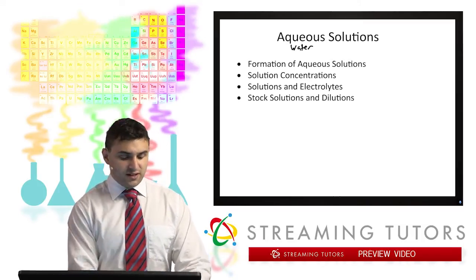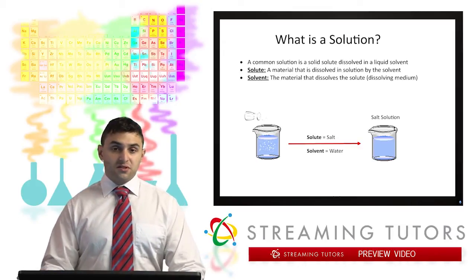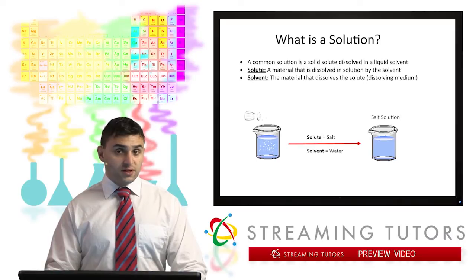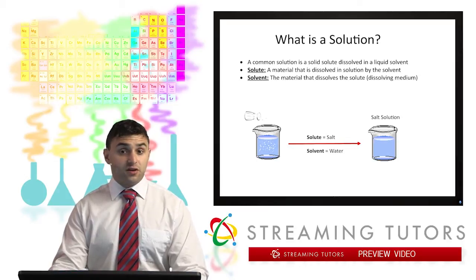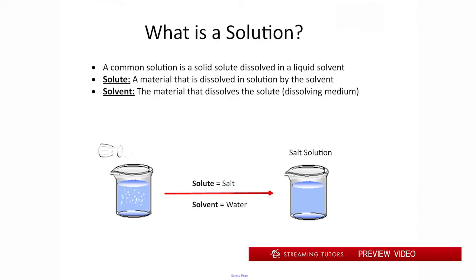The first thing we need to do is define exactly what a solution is. A solution is something where a solute is dissolved in a solvent. The most common example would be something like a salt dissolved in water. The salt is the solute, whereas the water is the solvent. The solute dissolves in the water, and it forms a homogeneous solution. The combination of the solute and the solvent forms the solution, and there's a certain concentration of the salt in that solution that we'll get into in the next two videos.